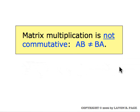Bear in mind that matrix multiplication is not commutative. In general, multiplying A times B is not the same thing as multiplying B times A. In fact, it's frequently the case that one of the multiplications is possible and the other one is not, because the sizes of the matrices don't match up right.